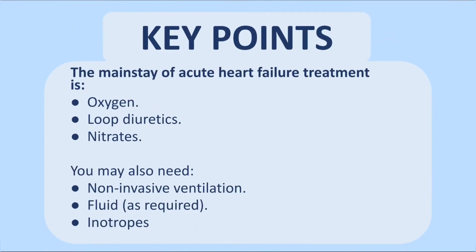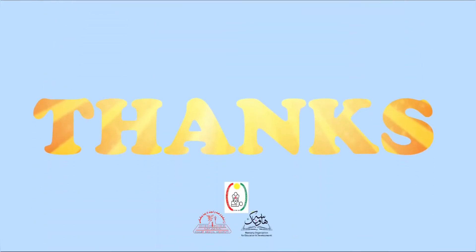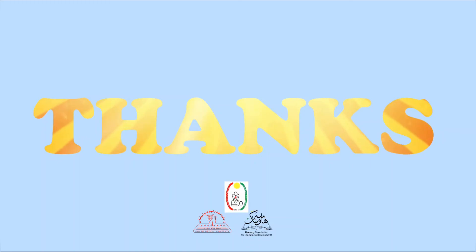In summary, the mainstay of acute heart failure treatment is: give oxygen, administer loop diuretics every 20 minutes, give nitrates if blood pressure is high, consider non-invasive ventilation if not responding, give IV fluid if right-sided heart failure is suspected, and start inotropes like noradrenaline if the patient is in shock. Thank you, and special thanks to the housing organization for preparing the slides.